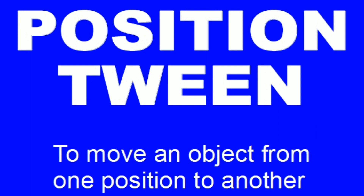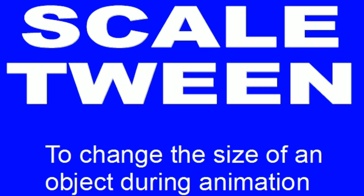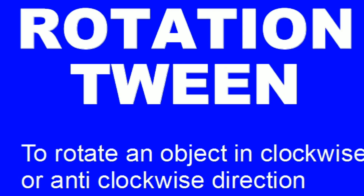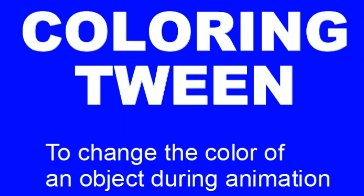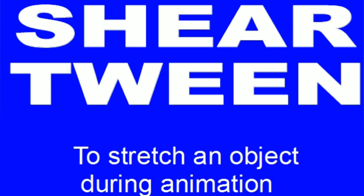Many different types of tweening are possible. For example, position tween is used to move an object from one position to another. Scale tween is used to change the size of an object. Rotation tween is used to rotate an object in clockwise or anticlockwise direction. Opacity tween is used to change the transparency of an object. Colouring tween is used to change the color of an object. Shear tween is used to stretch an object during animation.